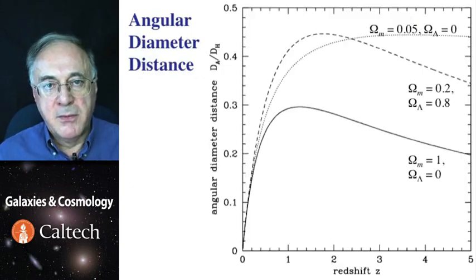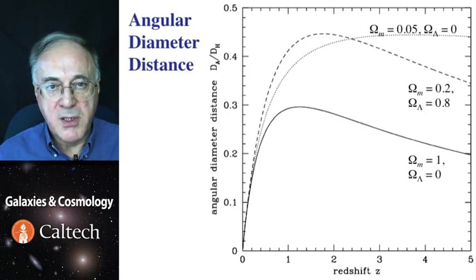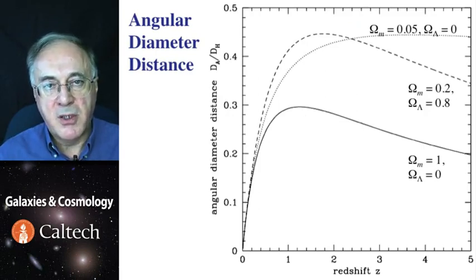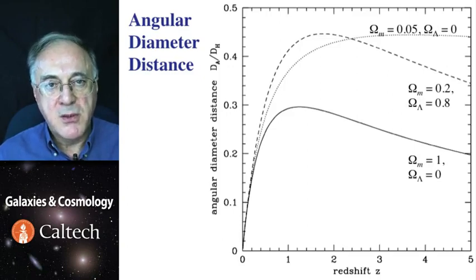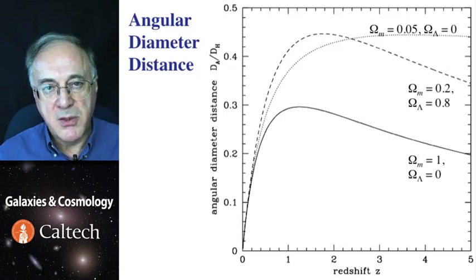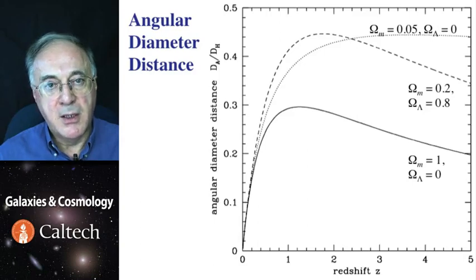Here is a plot of angular diameter distance as a function of redshift for several popular cosmological models. You will notice that in many of them, there is a maximum. At some distance from us, things no longer appear smaller. This is specific to relativistic cosmology. In a Euclidean space, the further away something is, the smaller it is going to look, always. Here, past certain depth, things actually start getting larger again.